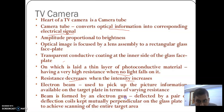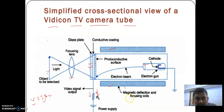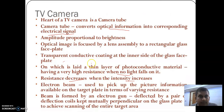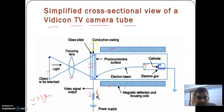The electron beam is formed by an electron gun and deflected by a pair of deflection coils kept mutually perpendicular on the glass plate to achieve scanning of the entire area. We adjust the magnetic deflection and focusing coils in such a way that they cover the entire rectangular plate. This is just a brief introduction about the TV camera tube. In the coming videos we will see different types of camera tubes, which are covered in Unit 2.